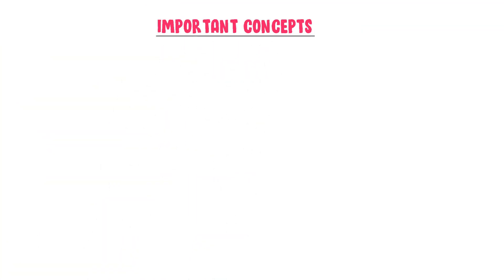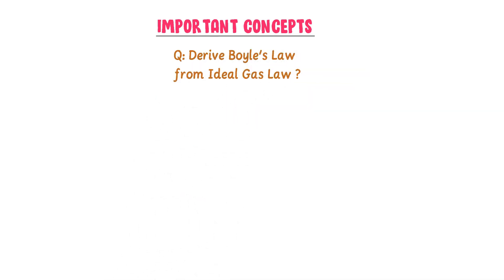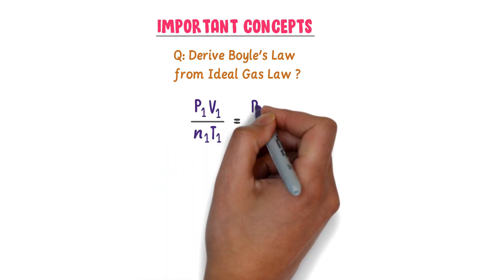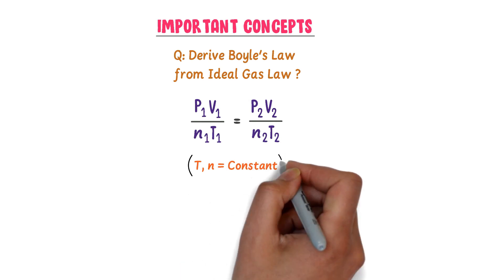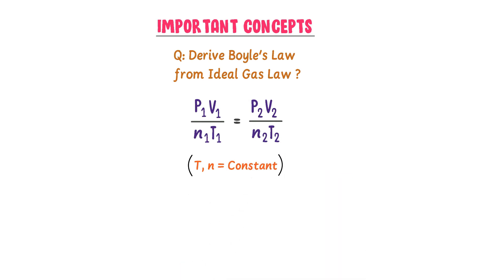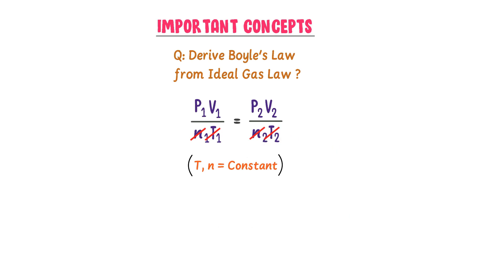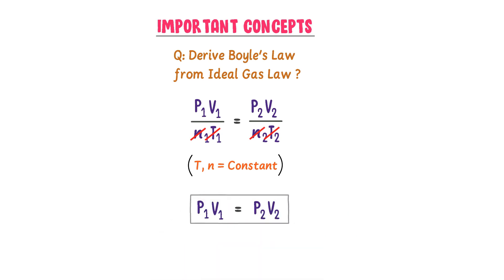Now let me teach you some important concepts of the ideal gas equation. For example, to derive Boyle's law from the ideal gas law: starting with P₁V₁/N₁T₁ = P₂V₂/N₂T₂, we derive Boyle's law at constant temperature and constant number of moles, so we cancel those variables and get P₁V₁ = P₂V₂. This is Boyle's law and the required proof.